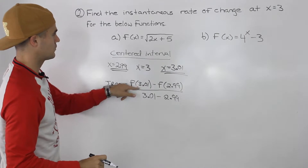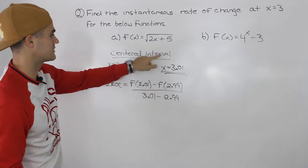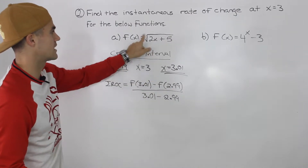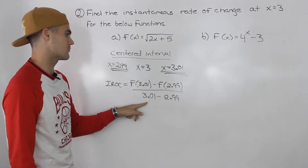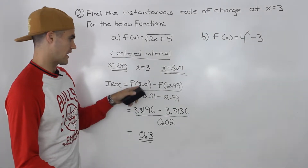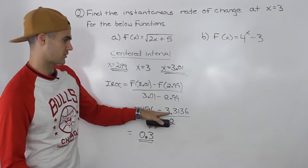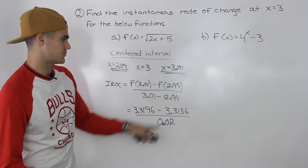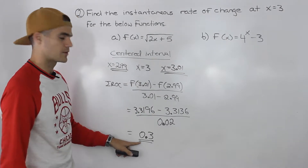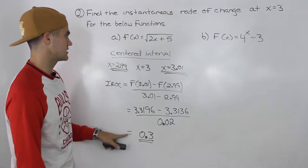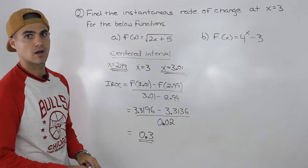So f(3.01) — we plug in 3.01 for x and get that value. And f(2.99) — we plug in 2.99 for x and get that value. When you subtract these in the denominator, those are just numbers. So doing all that in your calculator: f(3.01) is 3.3196, f(2.99) is 3.3136, and 3.01 minus 2.99 is 0.02. When you simplify that, you end up getting 0.3. So that's the approximate instantaneous rate of change for this function at an x value of 3.